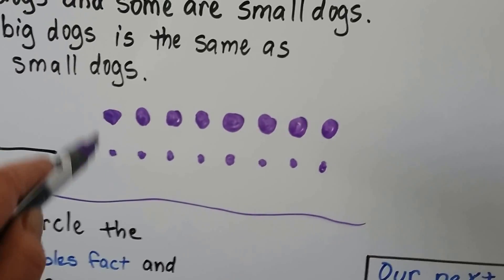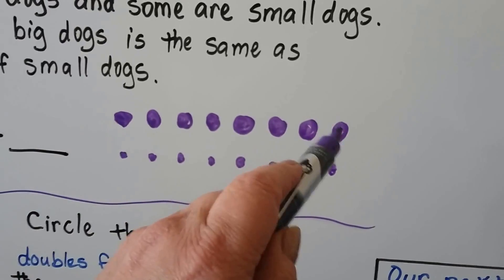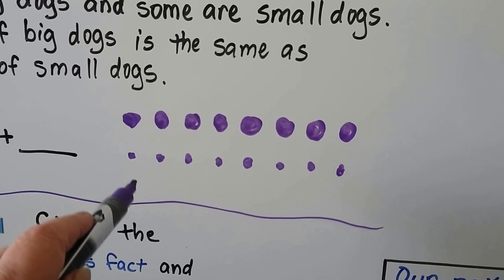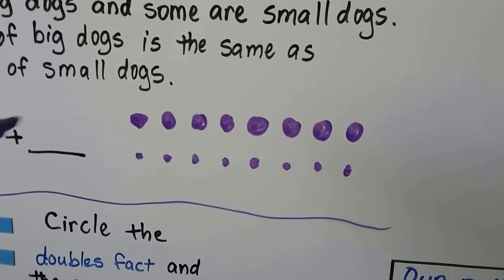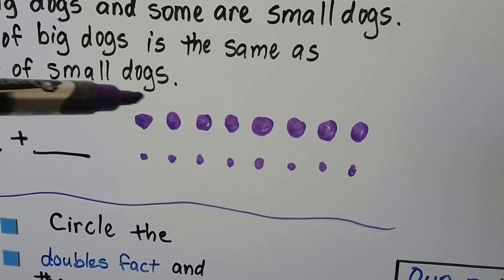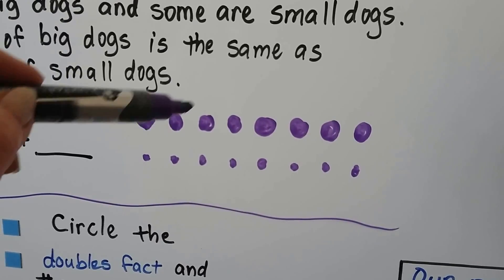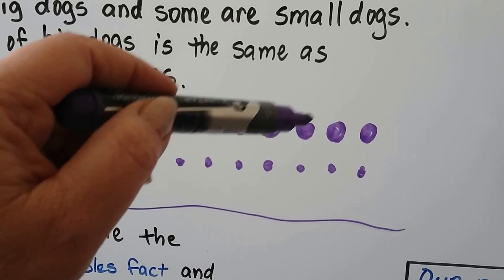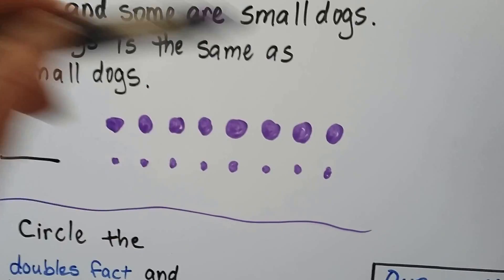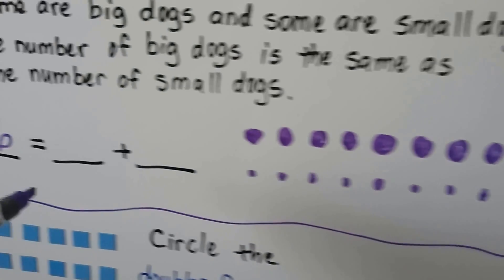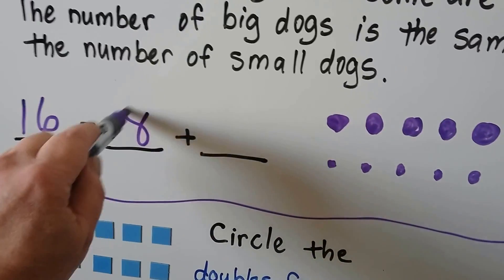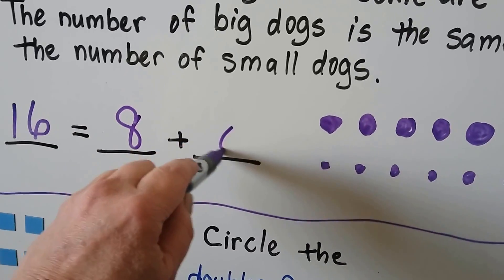Now there is the same number of big dogs as small dogs. How many are there of each? Counting: 1, 2, 3, 4, 5, 6, 7, 8. That would be 8 plus 8.